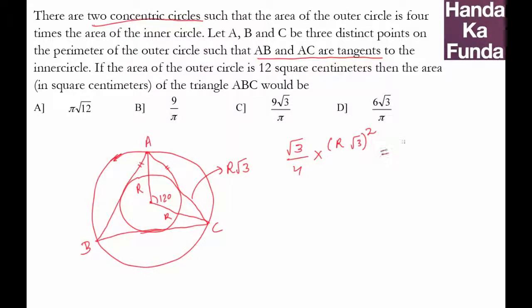So what do I get here? I get 3 root 3 r square by 4. Now my job is to find out the value of r square. I know that the area of the outer circle is 12 square centimeters. So that means pi r square is 12 or r square is 12 by pi.